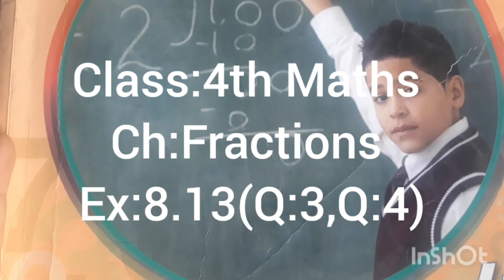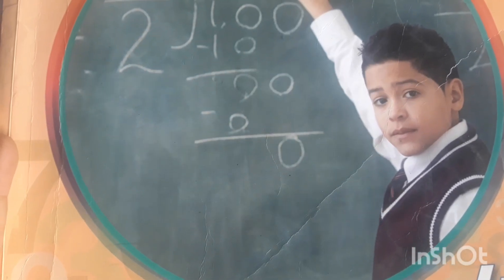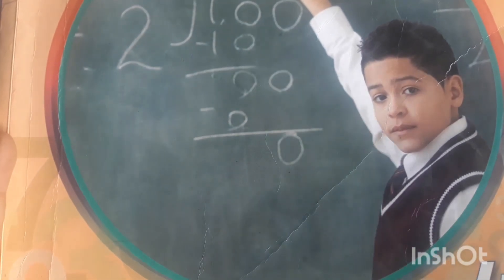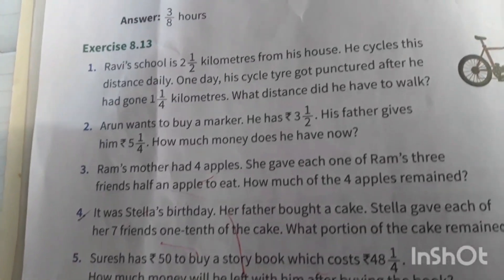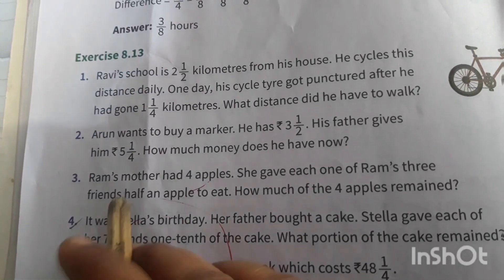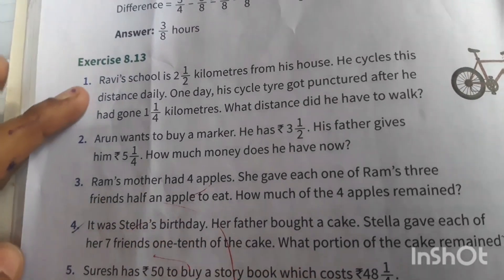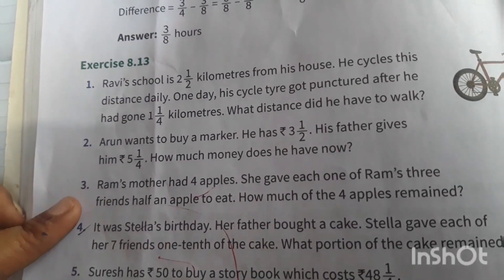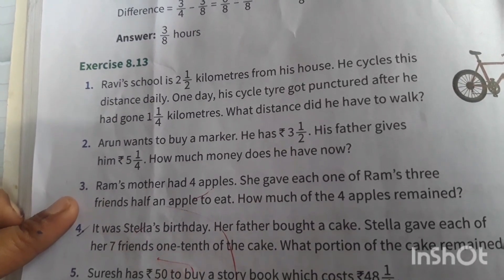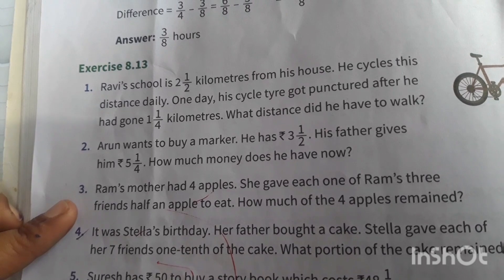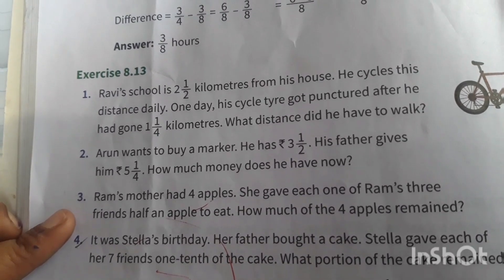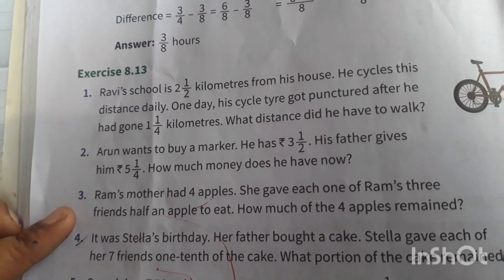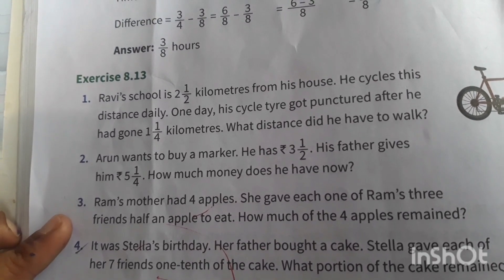Hello children, this is Post 100 Max. Chapter name is Fractions, exercise 8.13. Story sums.